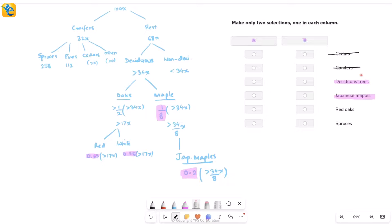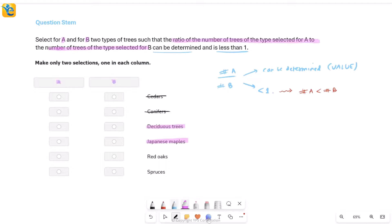But remember, this is not it. There was one more condition. So next thing to see was that number in A should be less than number in B. That's mainly just to choose which between these two will be marked for A and which one for B. Now think about it. Deciduous trees was the parent category. Within that, you went to maples and then to Japanese maples. So obviously, the number of Japanese maples is smaller. So I'll take that as A and I'll take deciduous as B. And we are done.